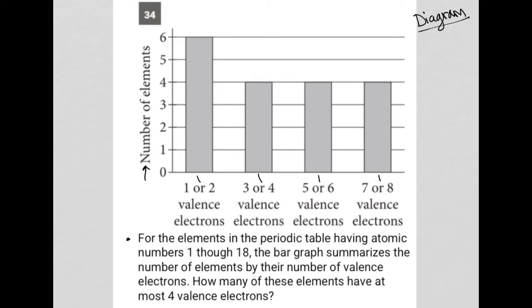The question says, for the elements in the periodic table having atomic numbers one through 18, the bar graph summarizes the number of elements by their number of valence electrons. How many of these elements have at most four valence electrons?